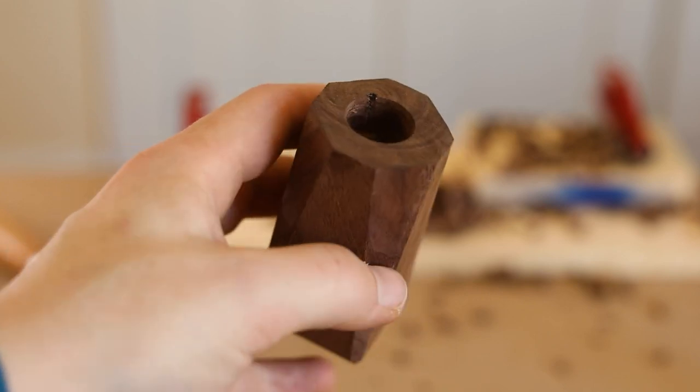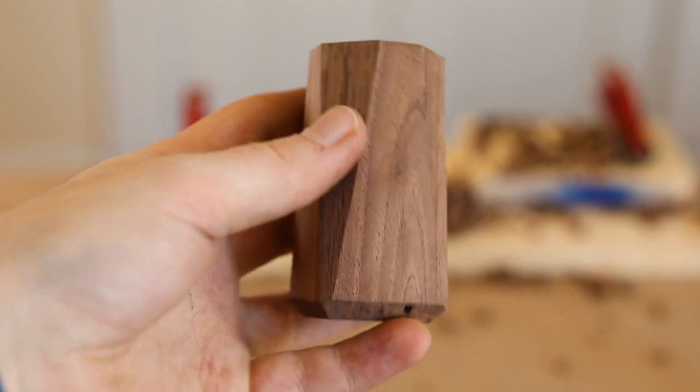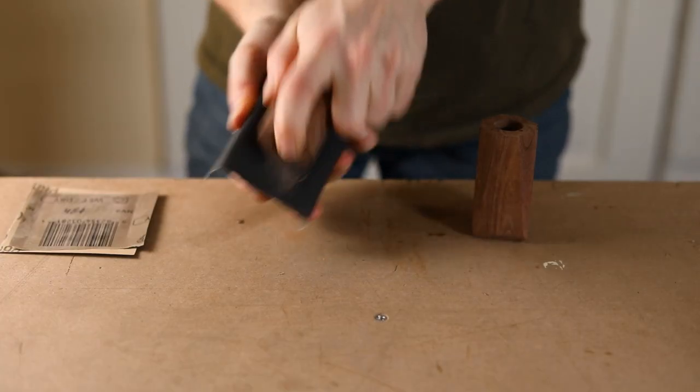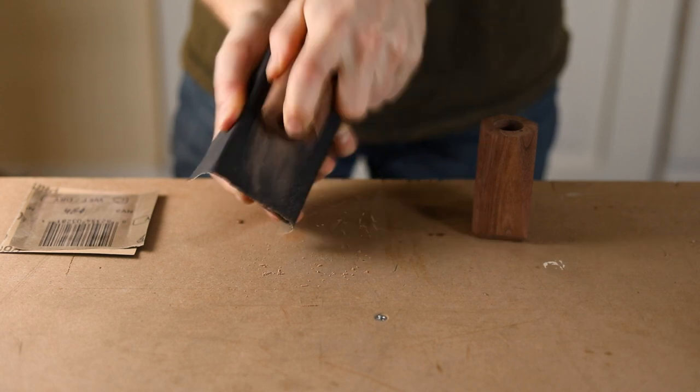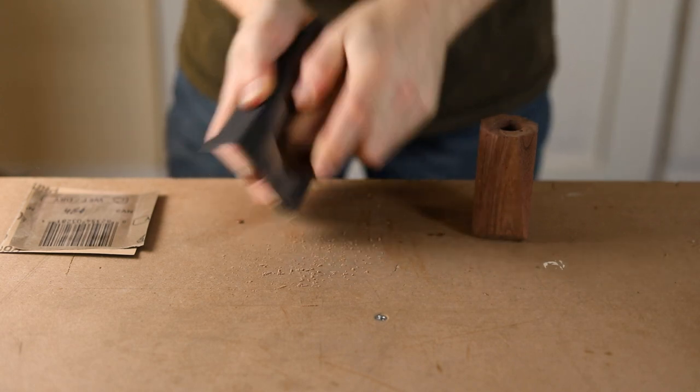After the chisel work is done, things are really taking on a nice faceted shape. Then it's time to sand. This piece of walnut already had a smooth surface, so it doesn't take much. I sand with 320 grit and call it a day.